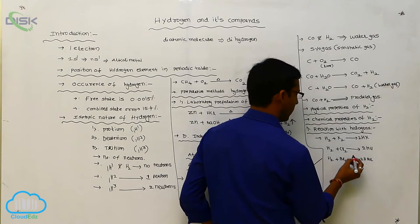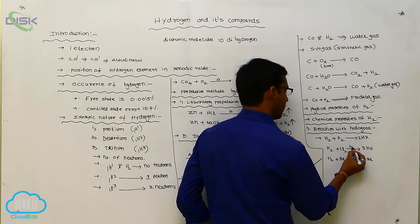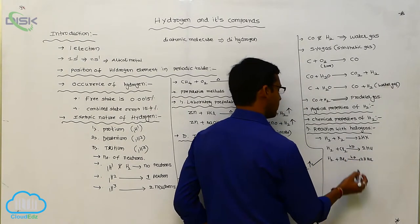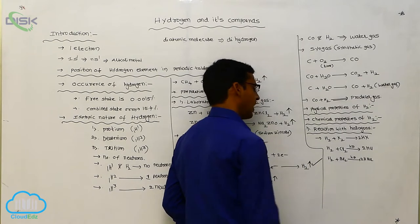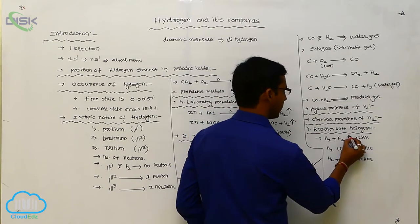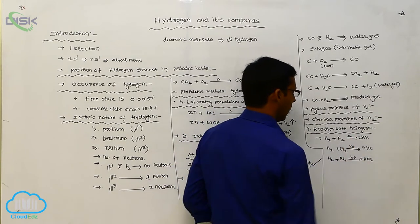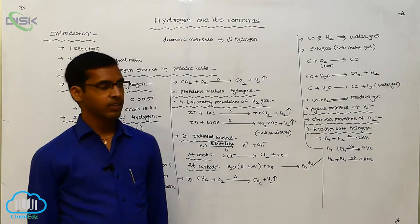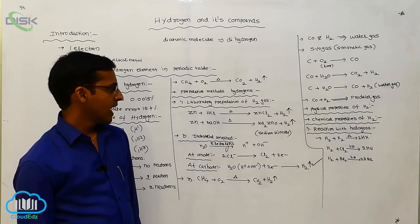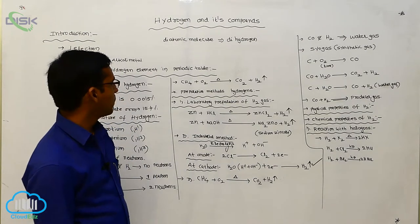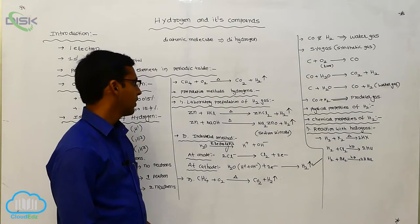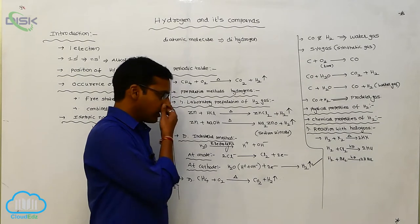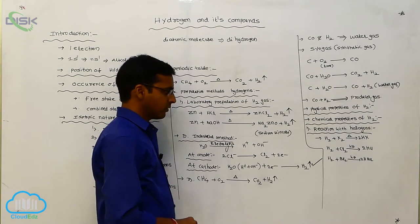Under specific photochemical conditions, hydrogen reacts with halogens to produce halides. That is the reaction with halogens.